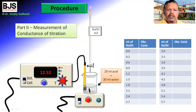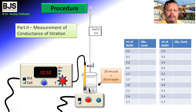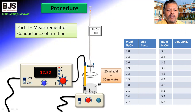The conductivity cell has two plates, and the solution is placed between those plates. Through the solution, electrons can move from one electrode to the other, and it conducts electricity. For conduction of electricity, we require ions present in the solution. Since acid is present, hydrogen ions are there, and we observe that the initial conductivity is 12.52 × 10⁻³ mhos. This is the zero reading — no NaOH has been added.